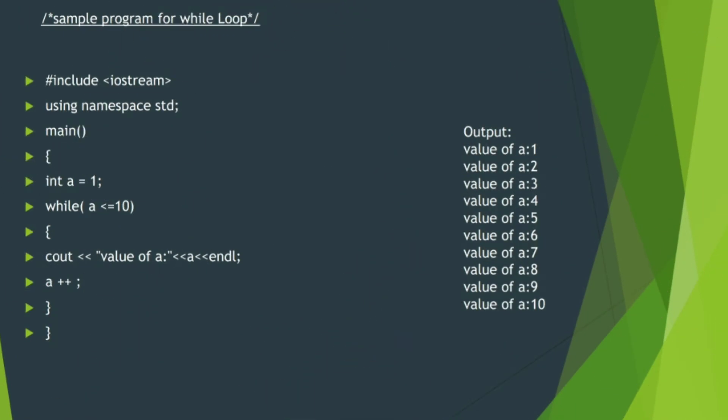The while loop is observed in a sample program. A is equal to 1, so we set the initial value. Then we check the condition: a is less than or equal to 10. We use the same logic as the previous for loop. We print the value of a using a++. Without the increment or decrement operator, we will not know the increase or decrease.